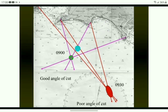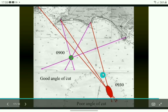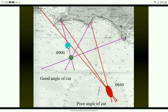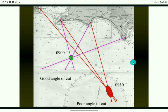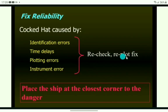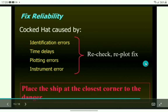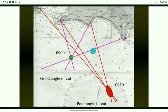Sometimes the angle of cut becomes shallow, which is called a bad angle of cut. In this case, the three position lines are not intersecting at the same point, leading to uncertainty in position fixing. Always place your vessel closest to the nearest danger. Recheck the position as quickly as possible, especially during coastal navigation. Keep rechecking position every five minutes or less to make sure you are absolutely sure of the vessel's position.